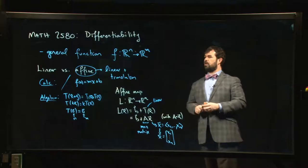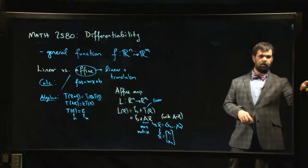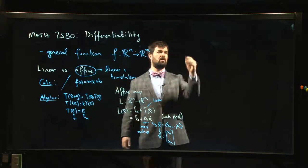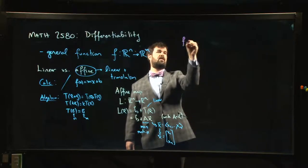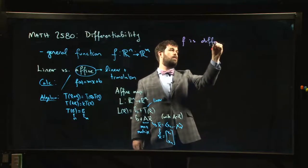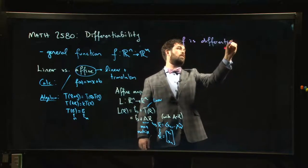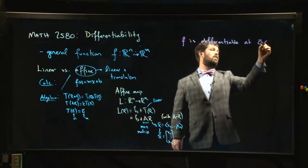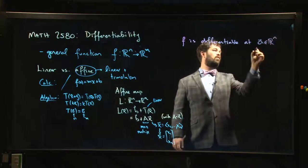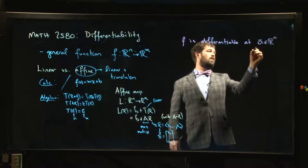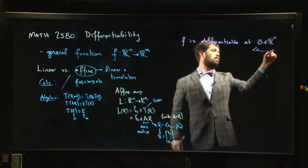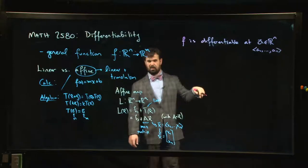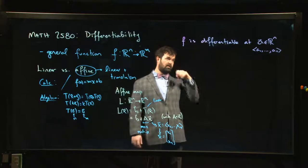One of the ways to think about what should it mean for a function to be differentiable—so saying that f is differentiable at some point a, where a is representing a point a_1 to a_n or a column vector however you want to think of it—what should it mean for f to be differentiable?